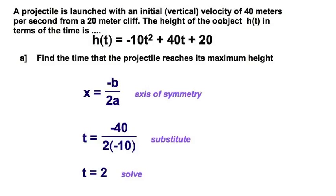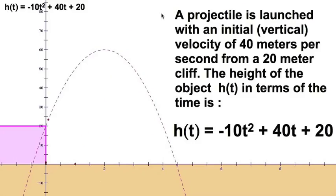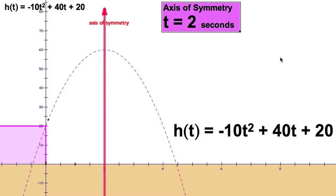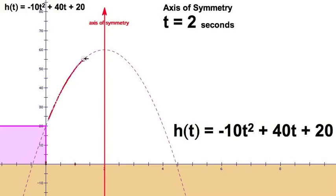So, our time, or the maximum height, is going to occur at the time of 2, because the time of 2 is the axis of symmetry. Let's visualize back to the screen. Right here, I'll move this side of the way. My axis of symmetry is right there, at t equals 2 seconds.